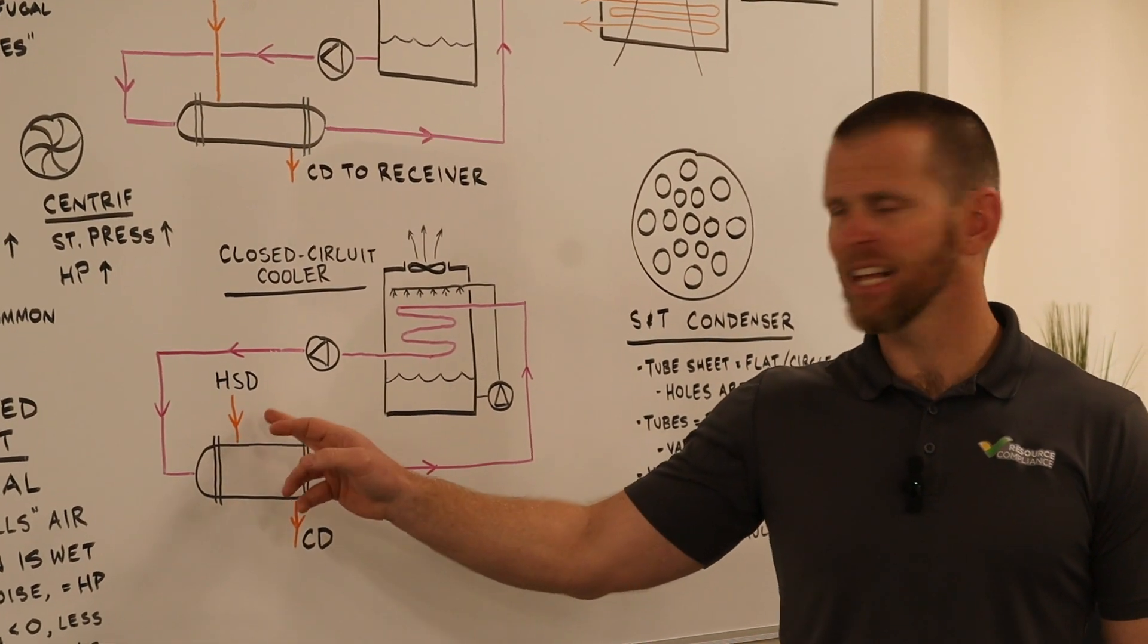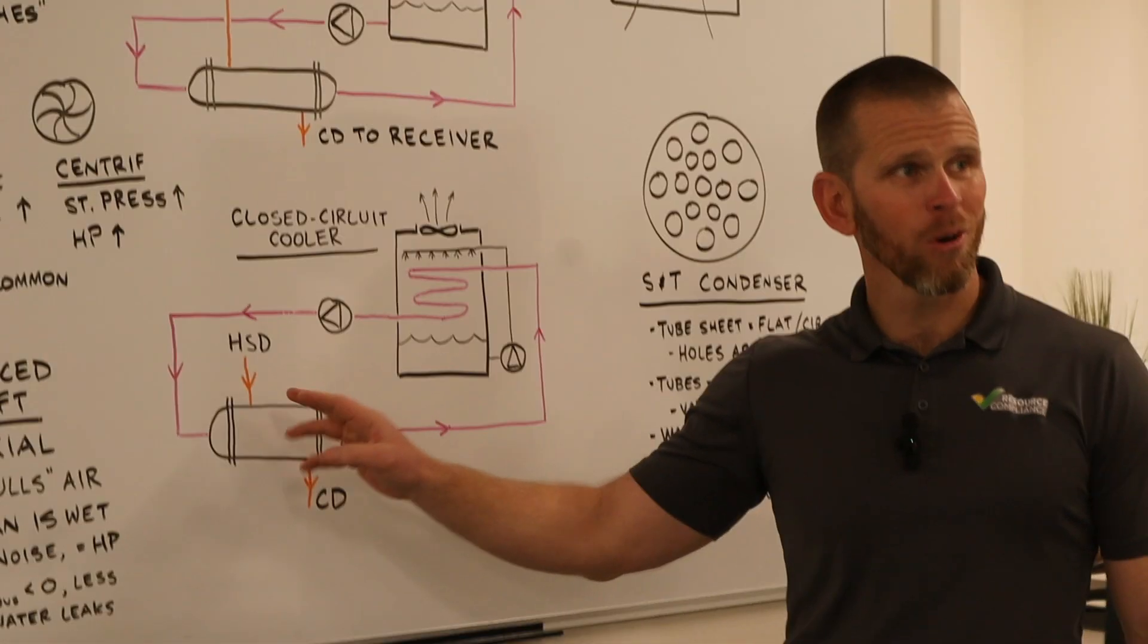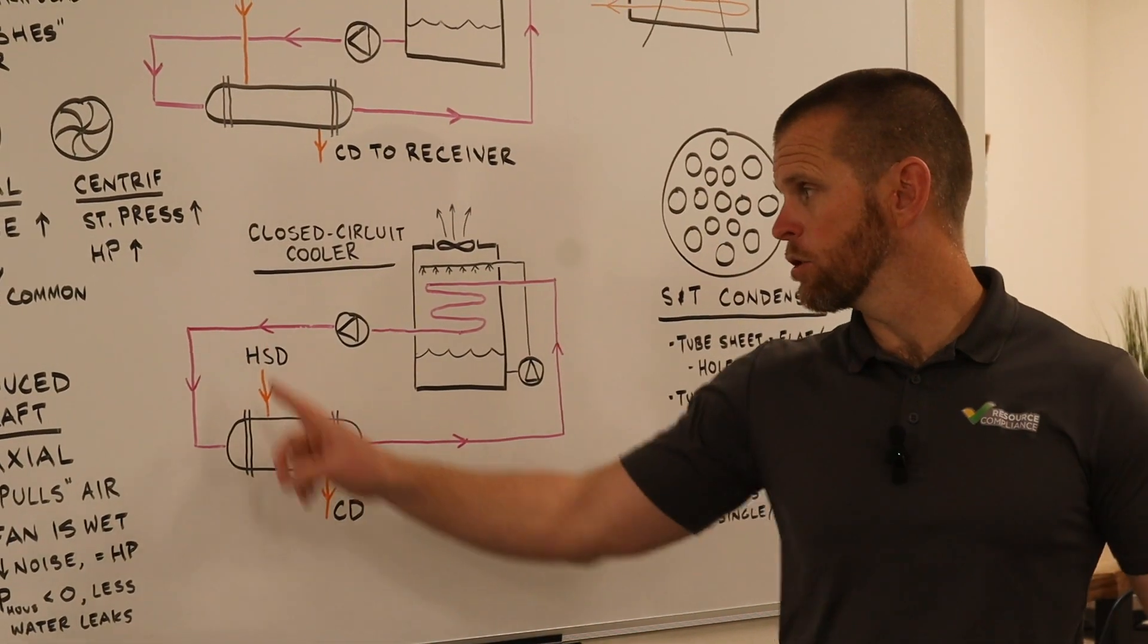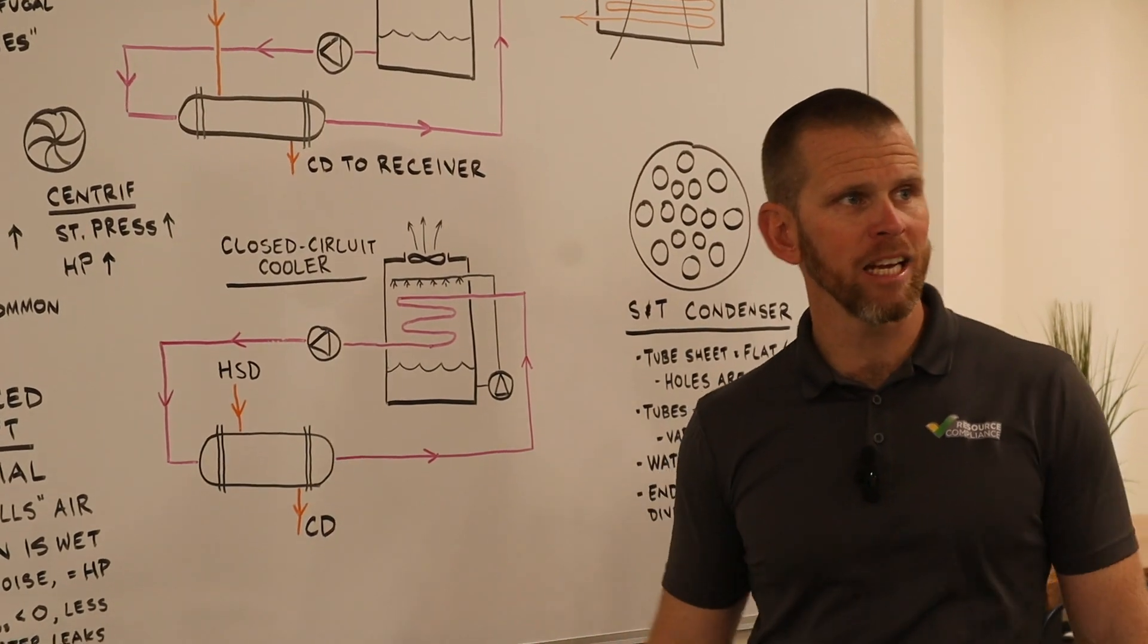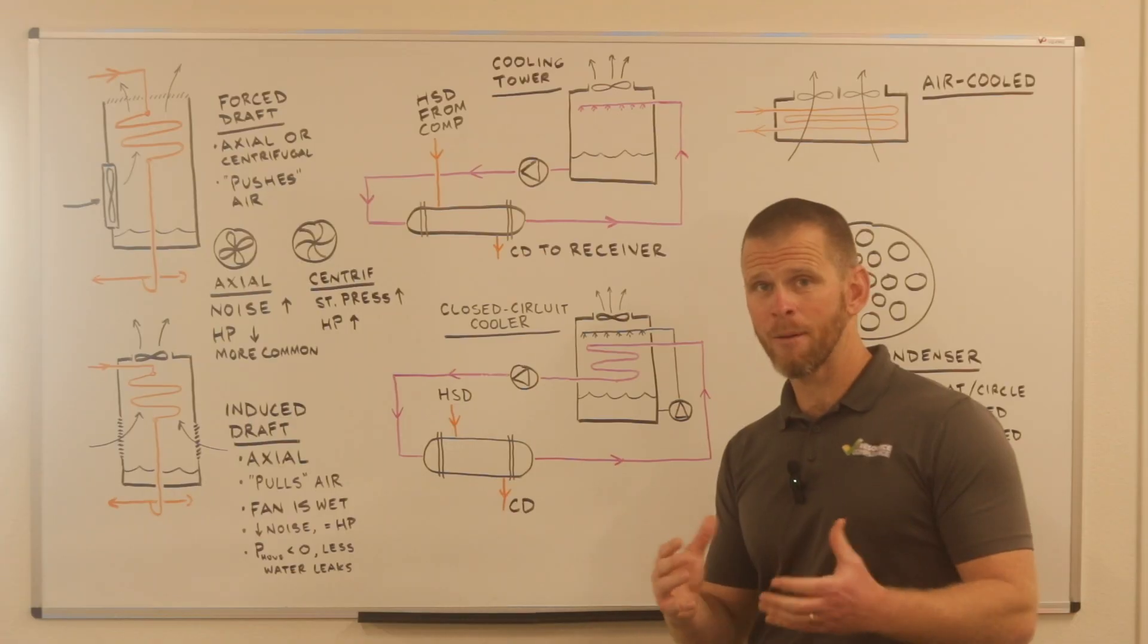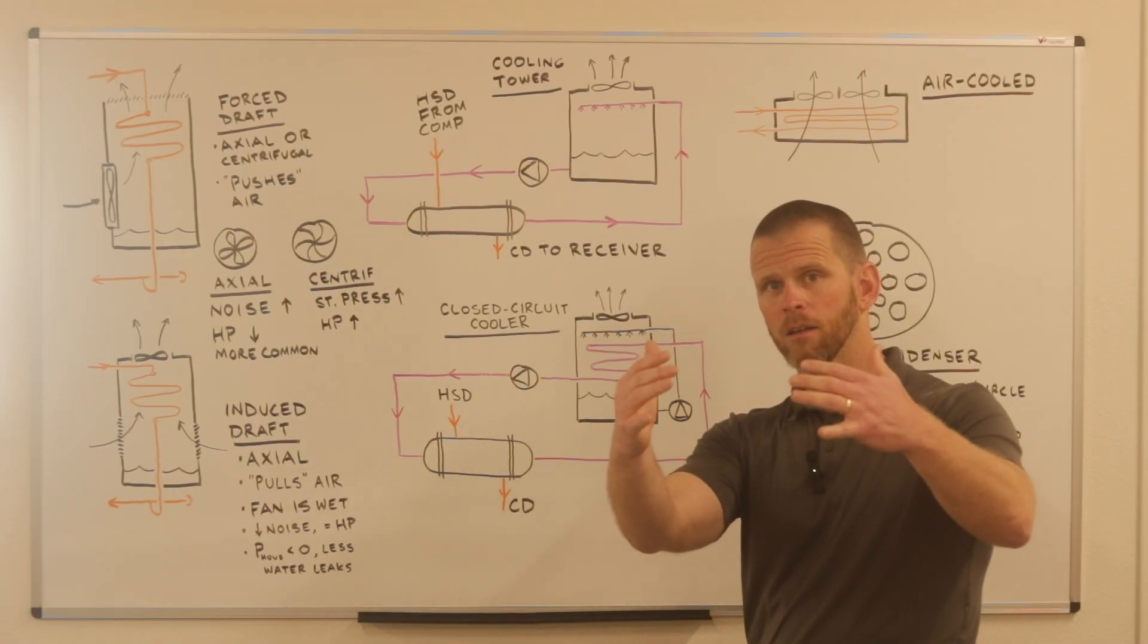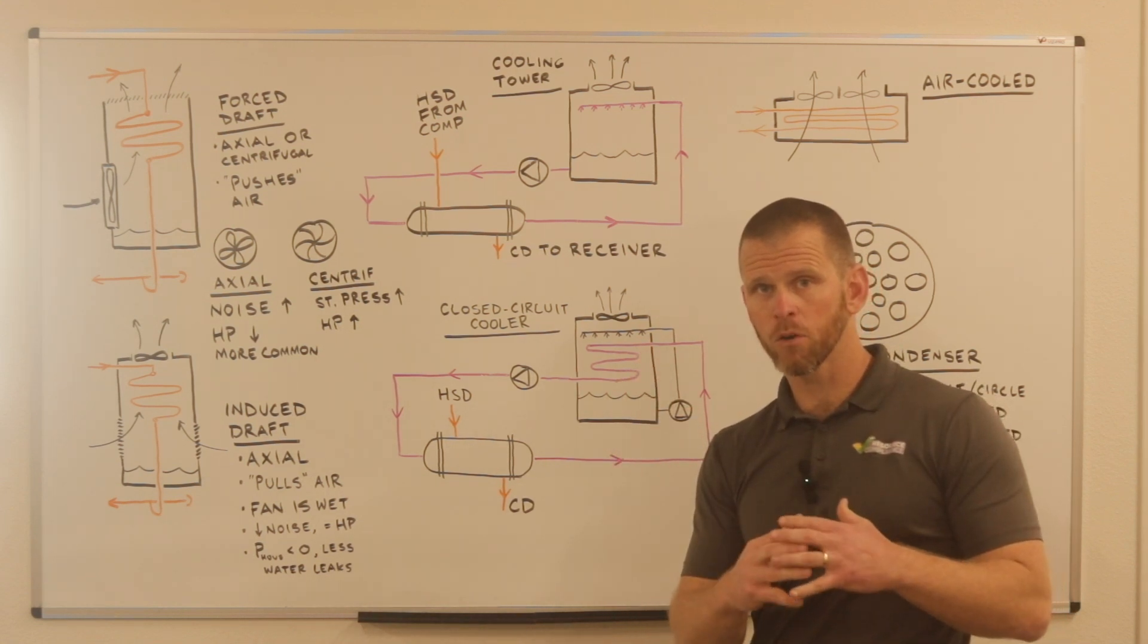The heat that's in the superheated vapor is getting rejected into the water that's being circulated through this shell and tube heat exchanger. In the process of doing that, the refrigerant is de-superheated first.